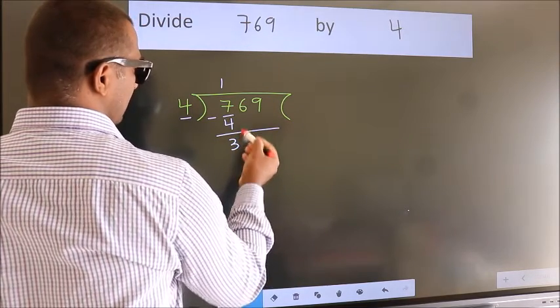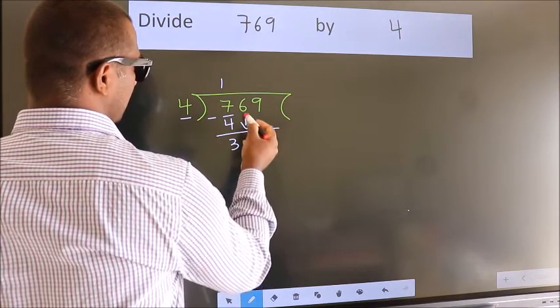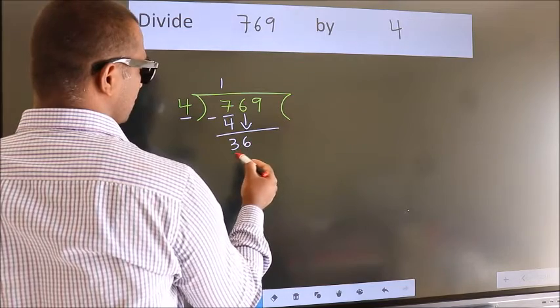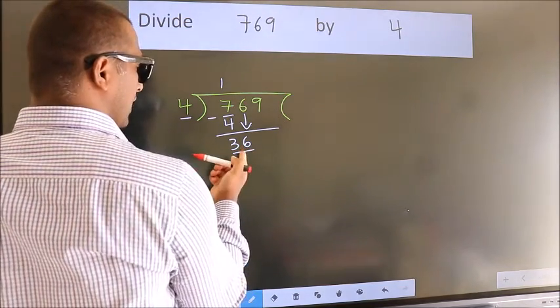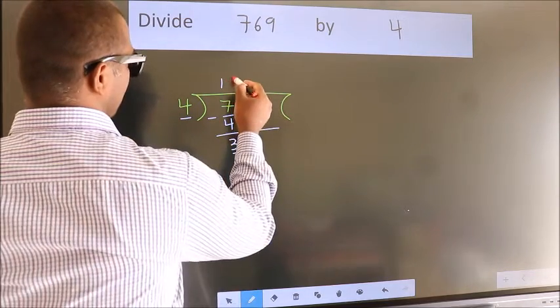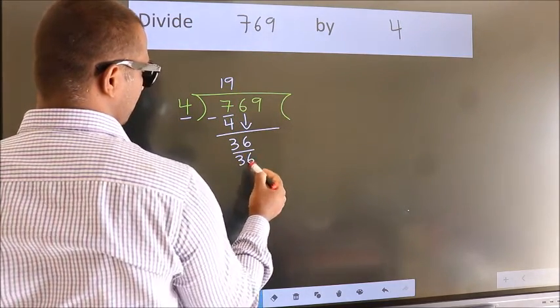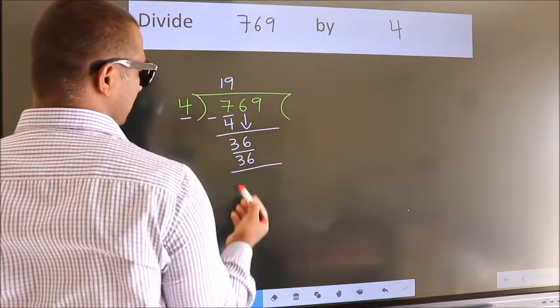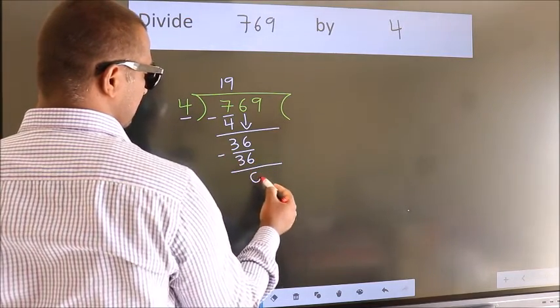After this, bring down the beside number. So, 6 down, giving us 36. When do we get 36? In the 4 table, 4 nines is 36. Now we subtract. We get 0.